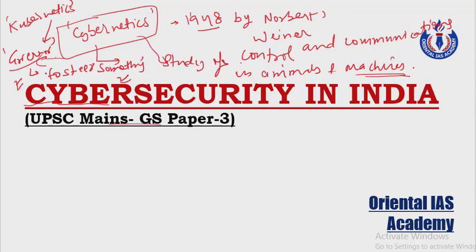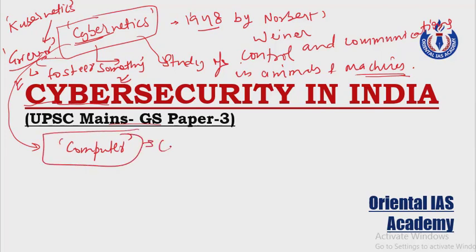The word cybernetics has evolved and now contains a lot more than what it was originally supposed to contain. Another example of this is the word 'computer.' When the computer was first built, its only objective was calculation or computing. But today, a computer performs a wide variety of functions that are even beyond a common man's imagination. So the word and its functions have continuously evolved. The same is the case with the word 'cyber.'